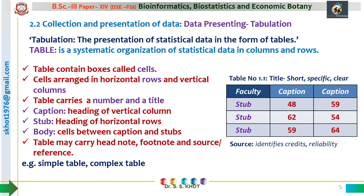In some cases, a large table may not fit on a single page. The table is then split into two or many sub-tables, numbered as 1a, 1b, 1c — indicating that these three tables contain the same type of data. The title of a table must be short, specific, and clear, without any ambiguity.